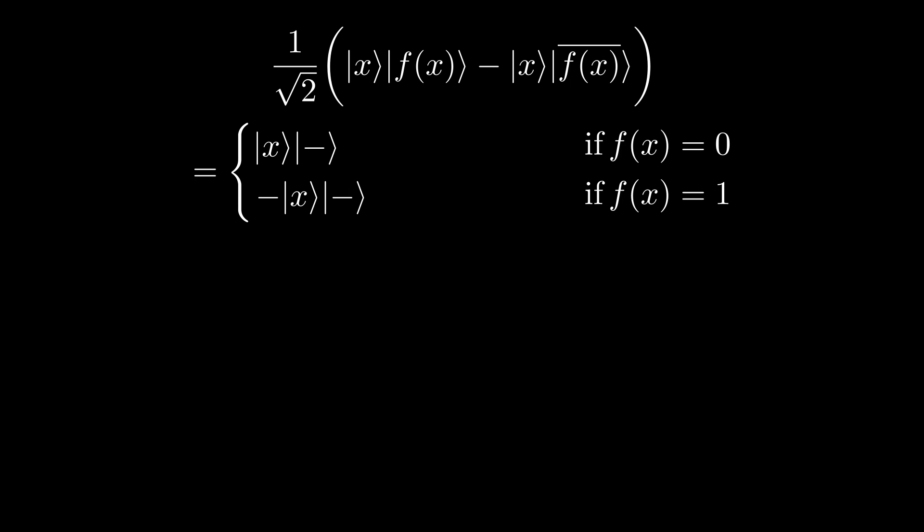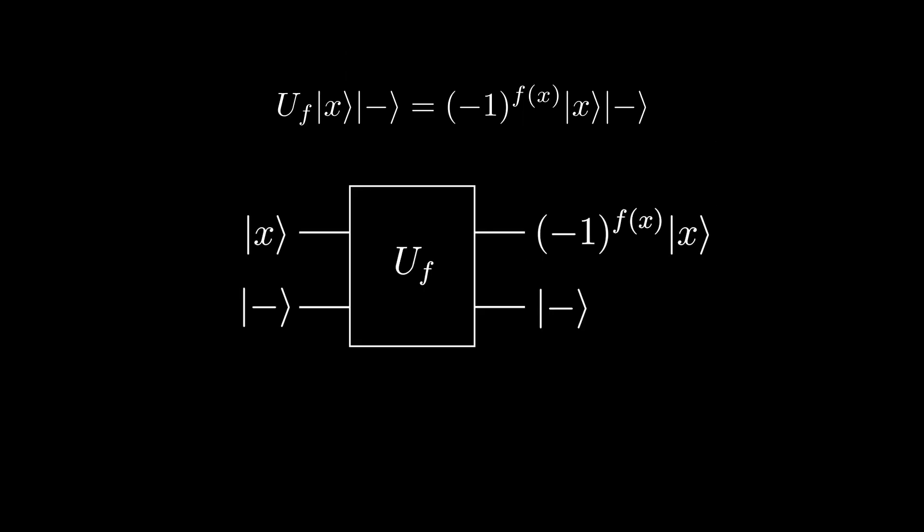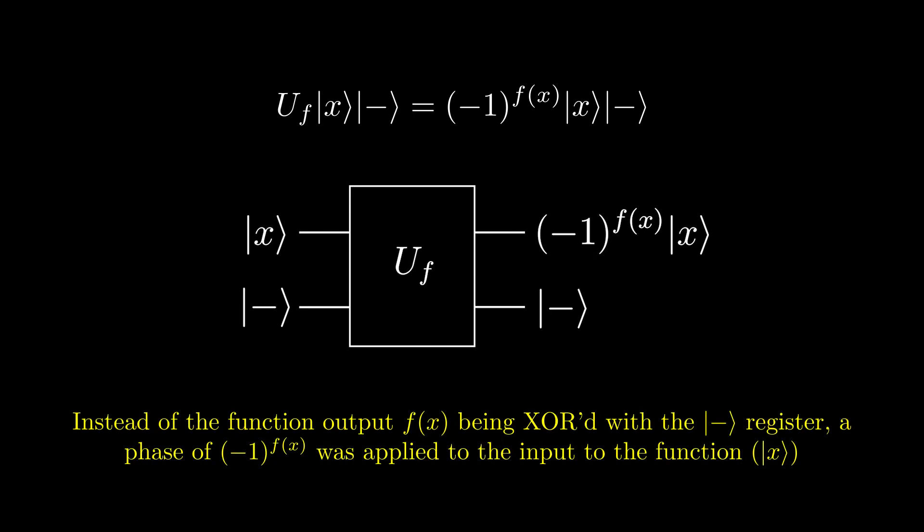Now looking at these two states, we can see that the only difference is the phase at the front. We can combine these two equations into negative 1 to the power of f of x times x minus. So if we apply a function to the state x minus, we get back negative 1 to the power of f of x times x minus. When we query a function in this way where the output bit is in the minus state, we call it a phase oracle.